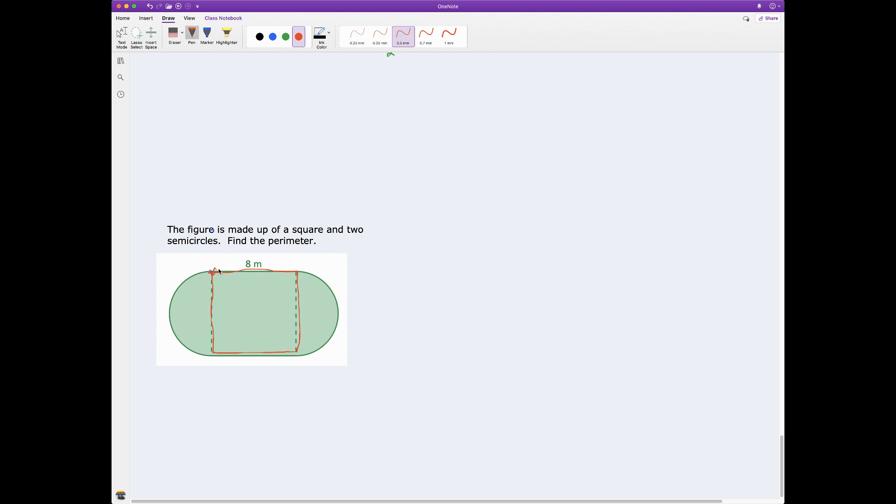For the square, I need to know this piece and this piece because that's going to be added into my perimeter. I know in a square each side is the same length, so that's 8 meters. This side is 8 meters, but I don't need that for the perimeter of the square. I only need these two sides. So the perimeter equals so far 8 plus 8, 8 meters plus 8 meters.